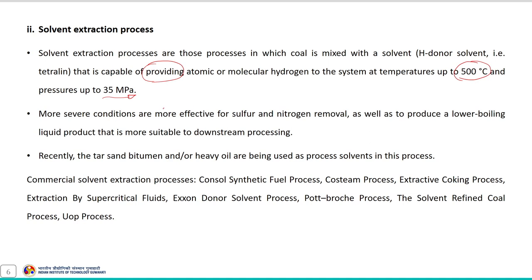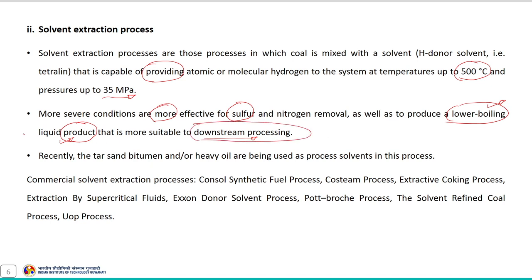Under more severe conditions, the solvent extraction process is more effective for the removal of sulfur and nitrogen from the fuel, and produces a low-boiling liquid product more suitable for downstream processing. Recently, tar sand bitumen or heavy oils are being used as solvents in this process, and commercial solvent extraction processes for such liquid products are also available.